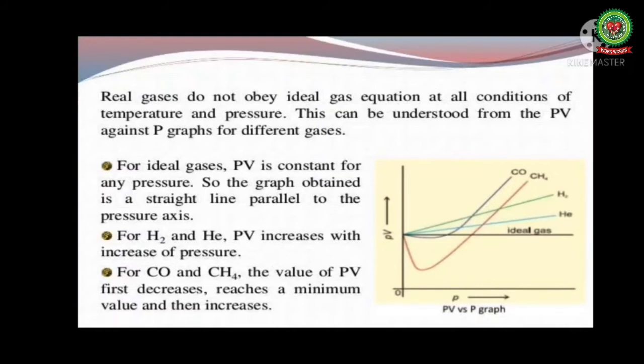In this graph for H2 and helium, PV increases with increase of pressure, so there is a deviation from the ideal behavior. For CO and CH4, the value of PV first decreases, reaches a minimum value, and then increases. So these gases are also showing deviation from the ideal behavior.